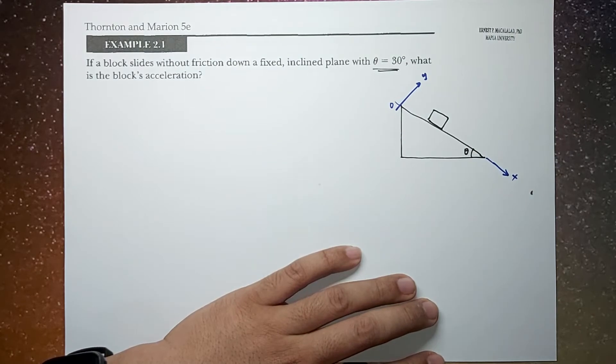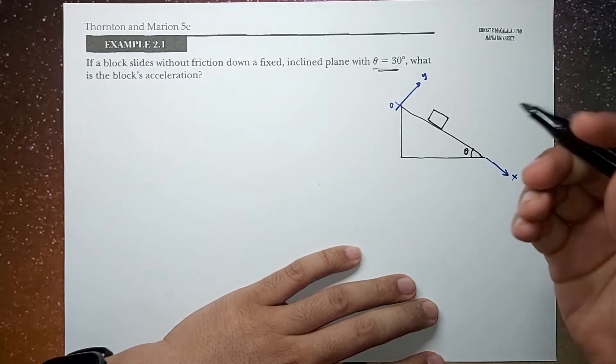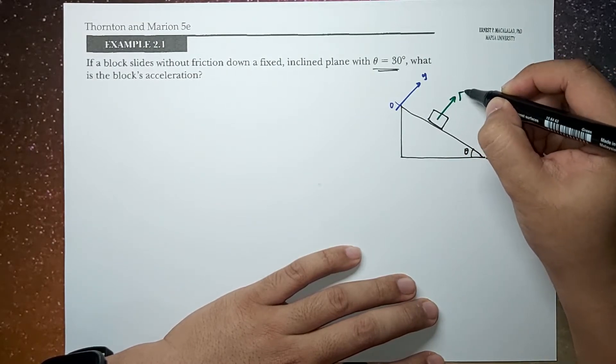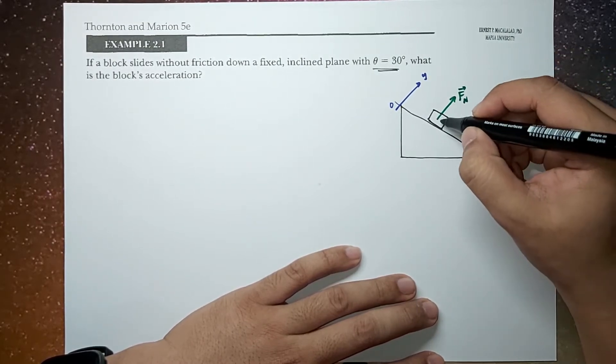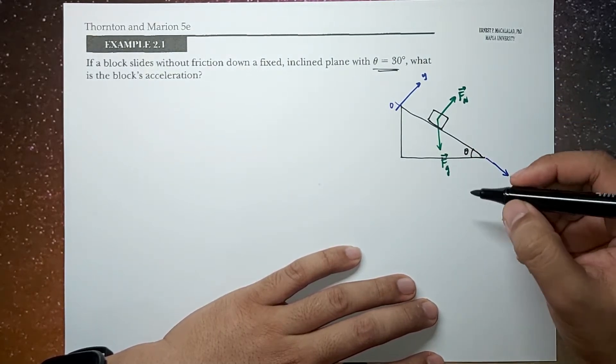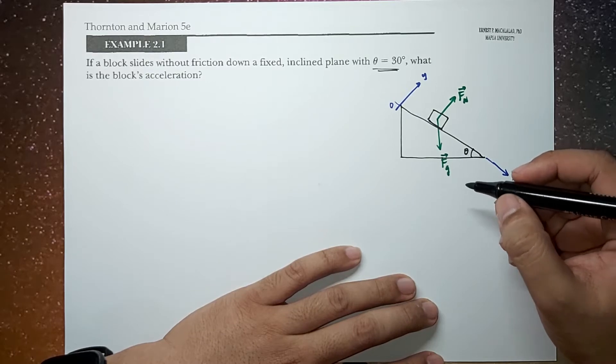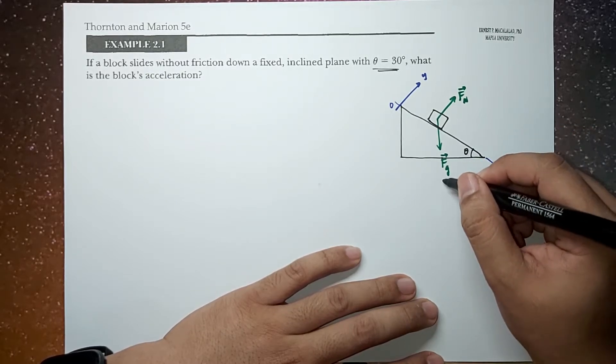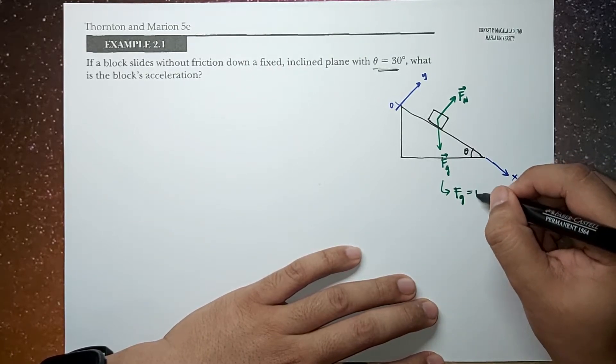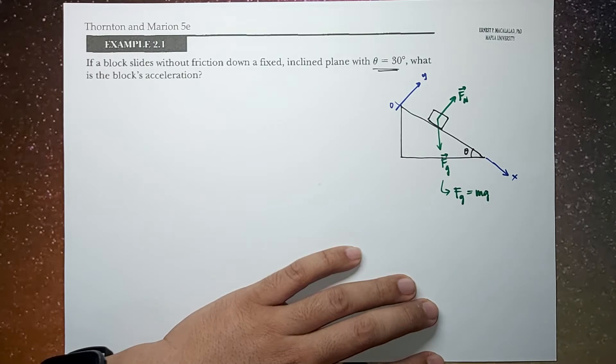we can see that we can identify the forces acting on this block, namely the normal force and the gravitational force. So the gravitational force is the magnitude of the gravitational force is equal to the mass times the acceleration due to gravity. And then we're going to calculate the magnitude of the normal force later.